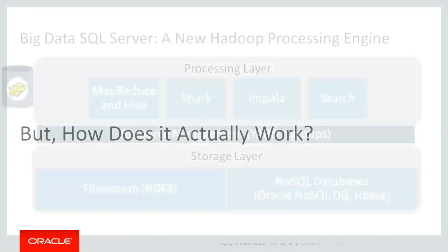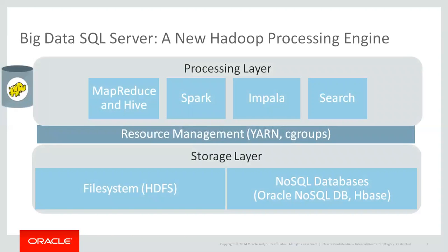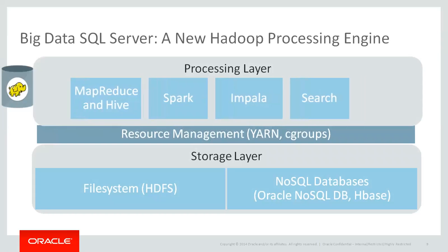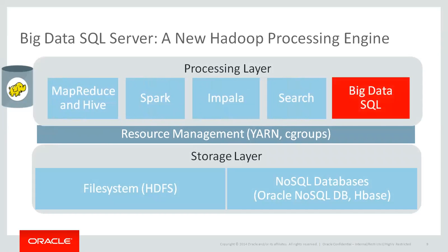Now let's have a brief talk about how it actually works. Hadoop has two different logical tiers: the storage tier, where you actually put your data — it could be either Hadoop file system HDFS or one of the NoSQL databases. Hadoop also has plenty of processing engines to query, process, and analyze your data — components like MapReduce, or its more convenient implementation called Hive, or Spark, Impala, cloud search, or Solr. And it could be Big Data SQL.